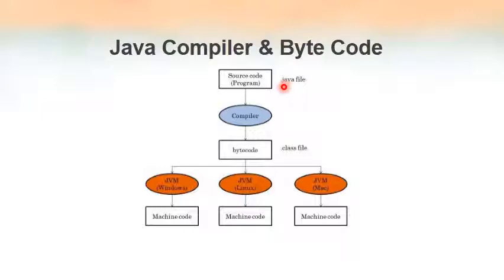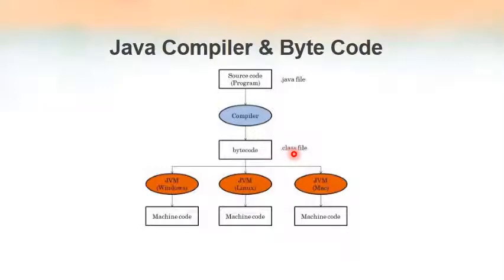Just as file extensions work for Word (.doc), PowerPoint (.ppt), or Excel (.xlsx), for C programs the extension is .c and for Java programs it is .java. The bytecode produced after Java compilation has the extension .class. So all bytecode files will have the .class extension.